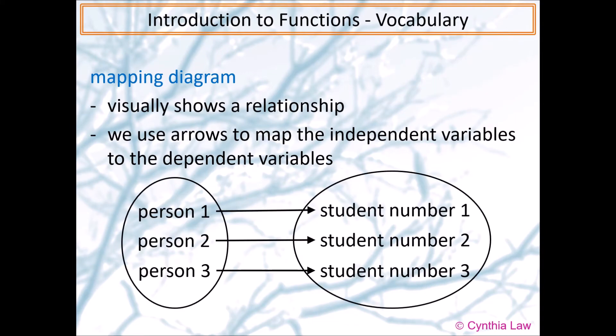Next is a student number example. So we talked about that each person can only have one student number from their school, and that student number is different from everyone else's student number. So this is a one-to-one relationship, and this is a function. So this relationship is a function.